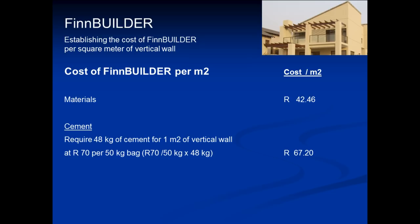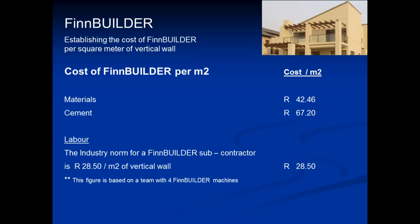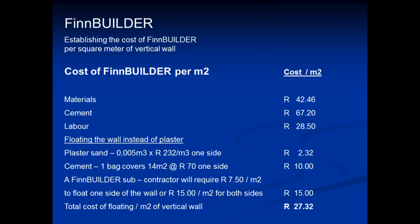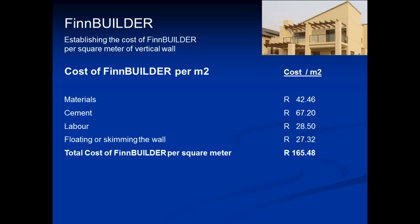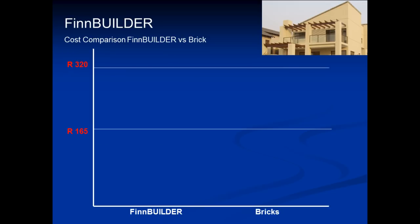Next we calculate the cost of cement at 67 Rand, then labour at 28 Rand 50, and floating the wall instead of plastering at 27 Rand 32. Put all this together and we see that building with FinBuilder has reduced the cost of walling by 50%, just half the cost of building with brick.